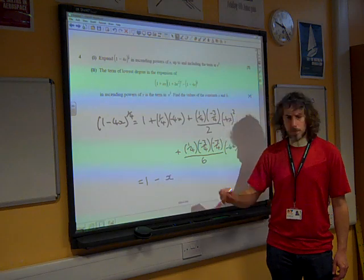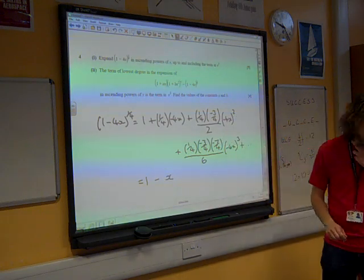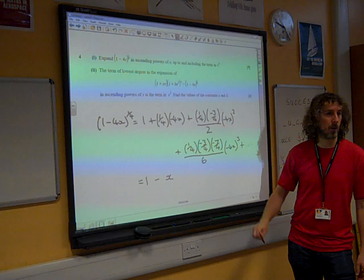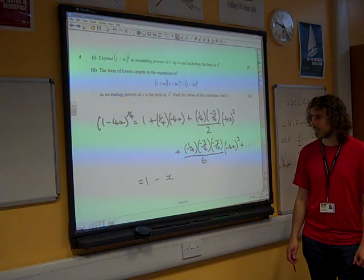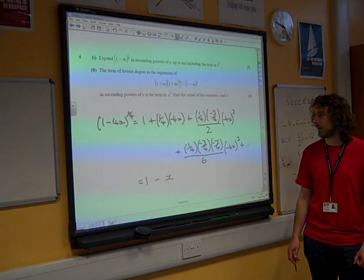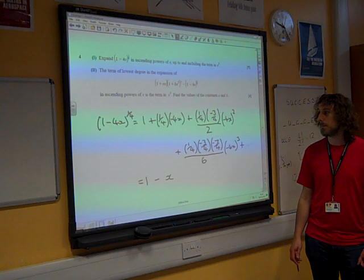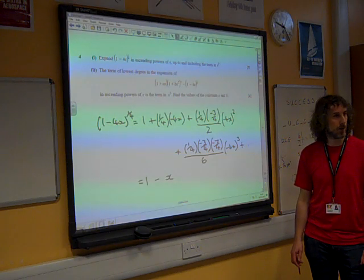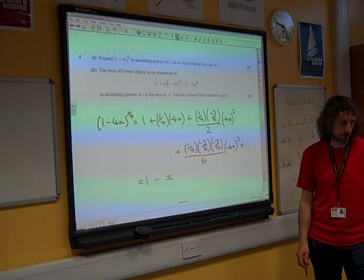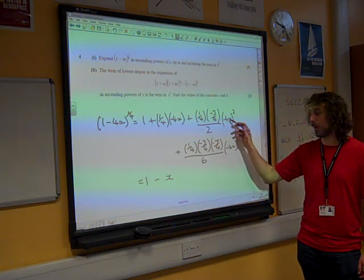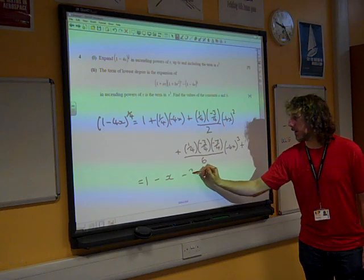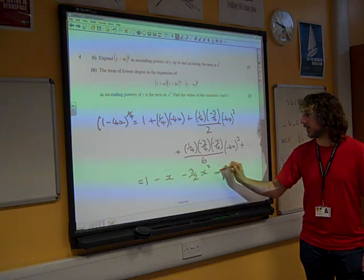This would be, is that 1 - x that we would have out of that? Because a quarter times minus 4. And then we've got, I think this is going to be minus 3 over 2.